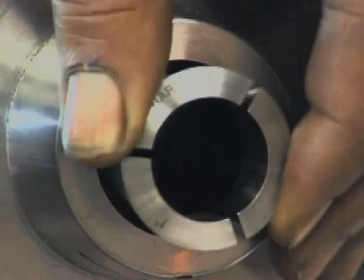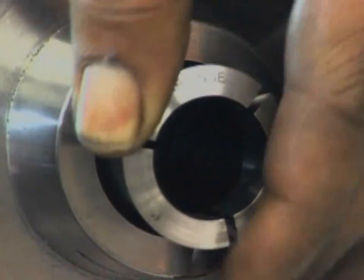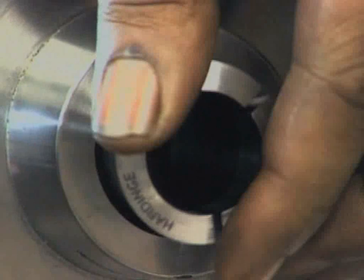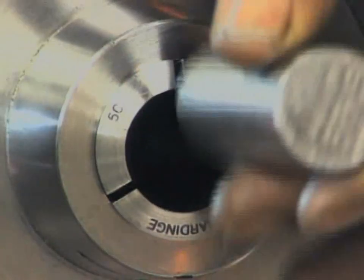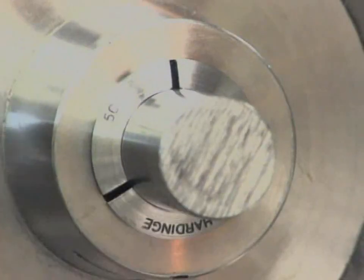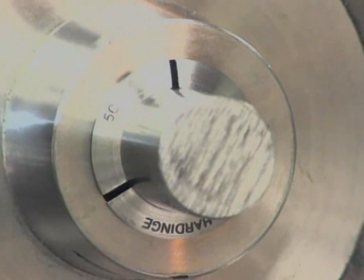Collets, which usually seat in the spindle of the lathe, are hollow cylindrical devices with slots along most of their length. A collet opens under its own spring tension and is closed securely to grip the stock. They hold small-diameter round work on center.